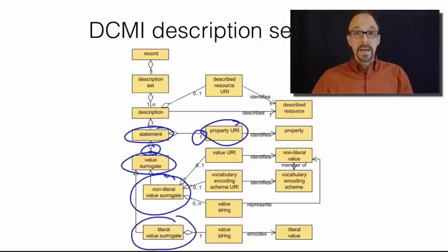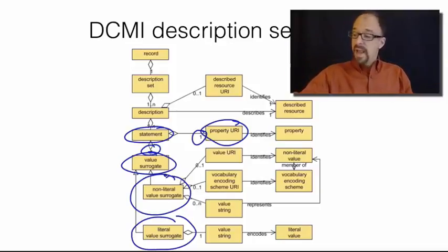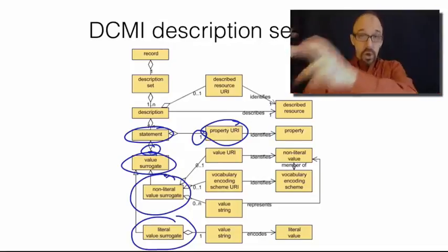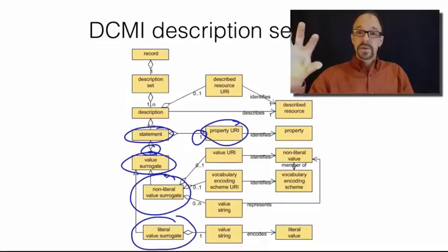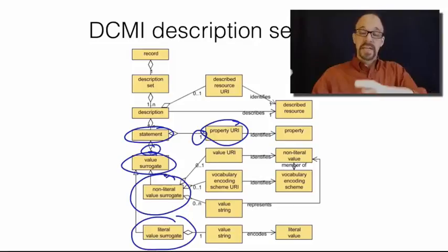Again, the element or property is creator. The value is Leonardo da Vinci, and then Leonardo da Vinci is two things. It is the name Leonardo da Vinci and the person. There's two things: the actual person and the name that represents that person.